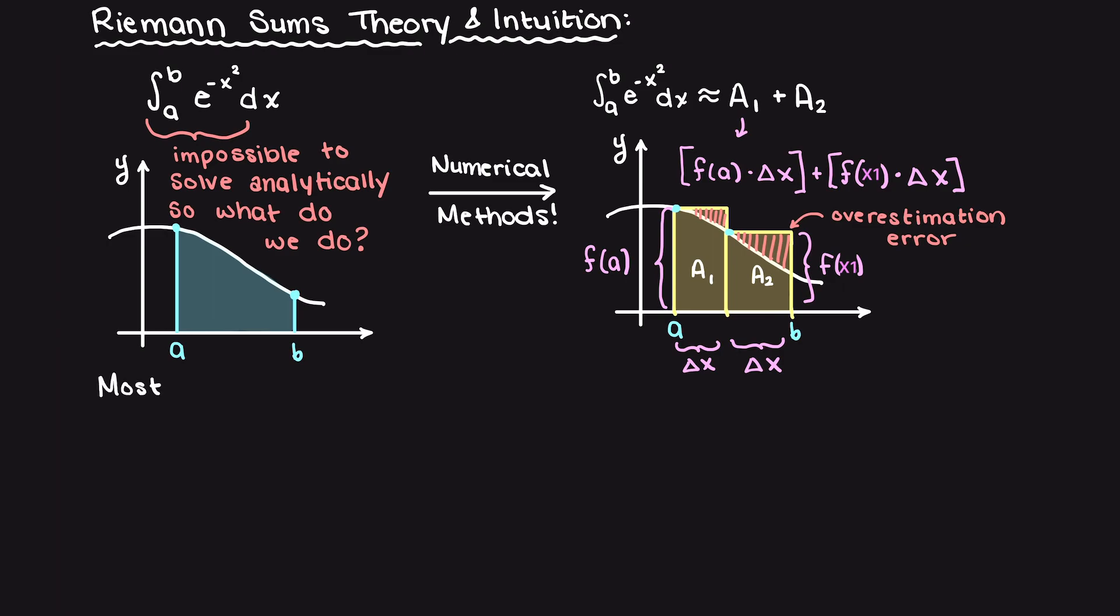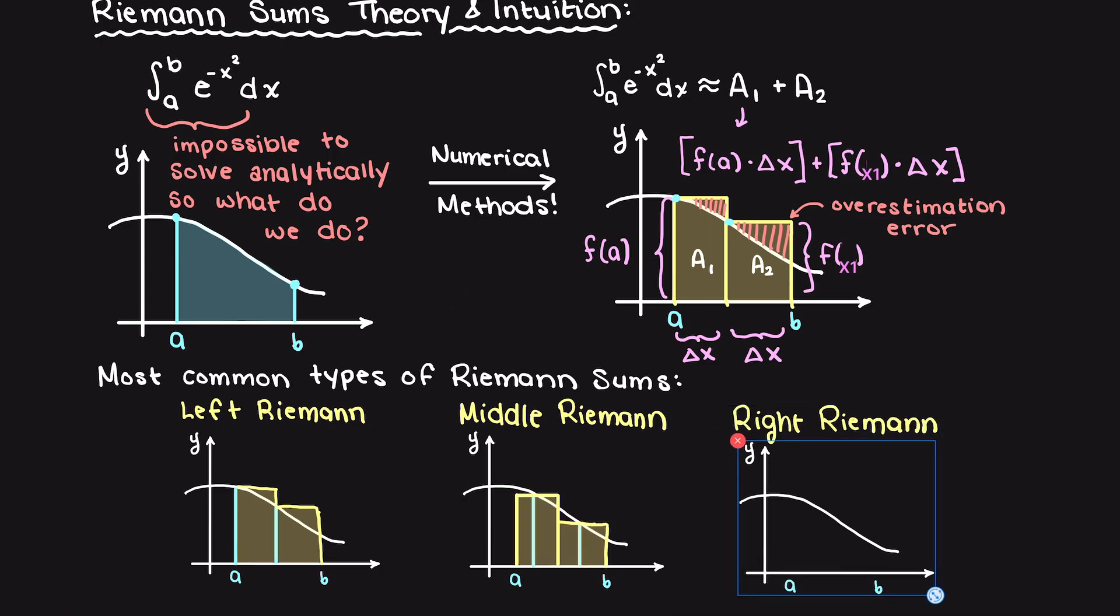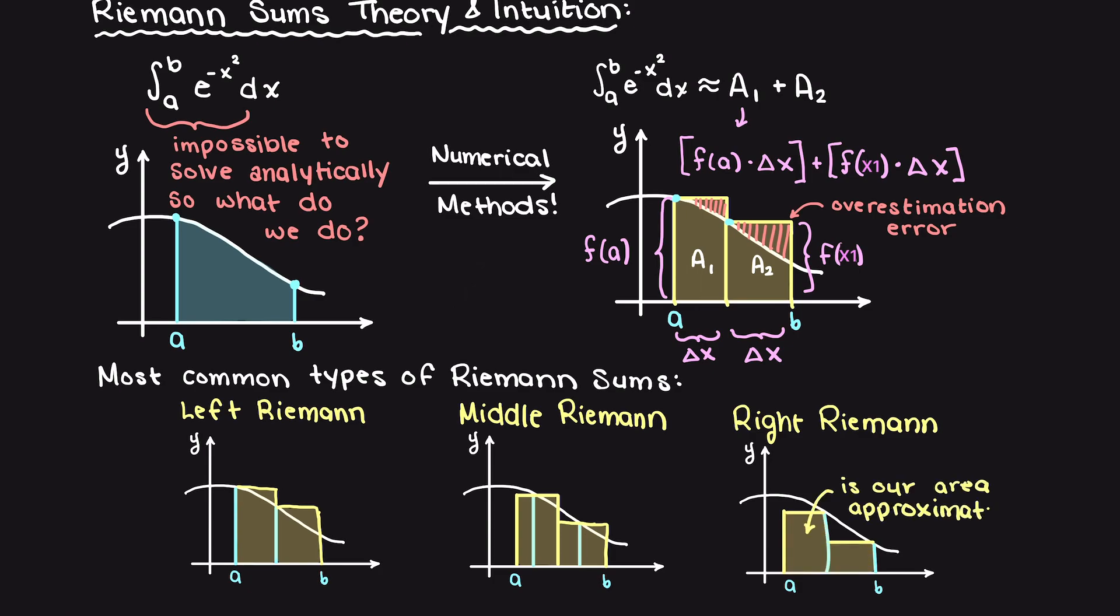Briefly though, in this example, we only use the top left hand corner of our rectangle to approximate the integral. What if we use the right side, or even the midpoint of the rectangle? Well, these are all valid ways of conducting Riemann sums, and they are called the left Riemann sum, the middle Riemann sum, or the right Riemann sum.